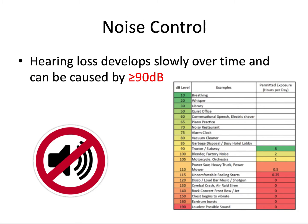Noise control is something important to consider in the dental setting, because many of the instruments we use can be fairly loud. Hearing loss develops slowly over time and can be caused by repeated exposures to sounds greater than or equal to 90 decibels. Dentists are exposed to the noise of handpieces and ultrasonic scalers that can range from 60 to 100 decibels, so it's definitely something to think about. There's a helpful chart listing decibel level sounds from low to extremely loud.